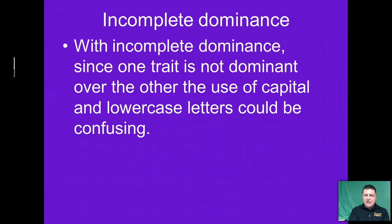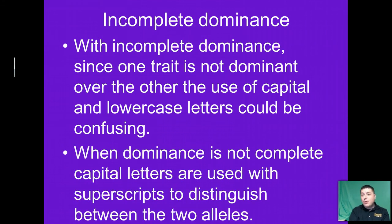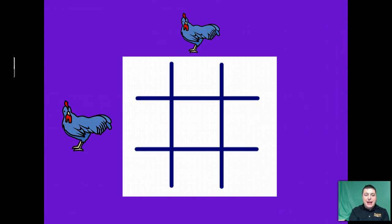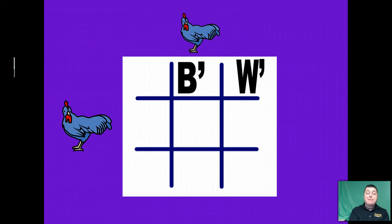When dealing with incomplete dominance, since one trait really isn't dominant over the other, using capital and lowercase letters could be confusing. So when dominance is not complete, capital letters are oftentimes not used. Instead, we use all capital letters and indicate the difference in the alleles with a superscript. For example, here we have some blue Andalusian chickens. They're blue because they have both a black allele and a white allele, shown with capital letters and superscripts indicating they are for the same trait.